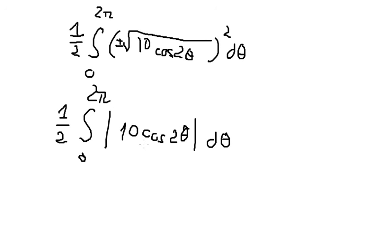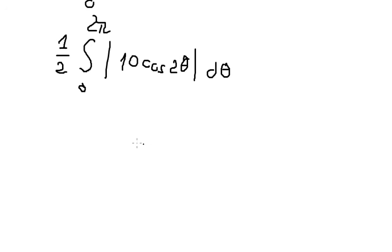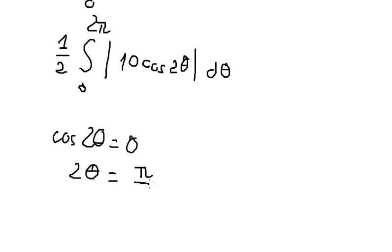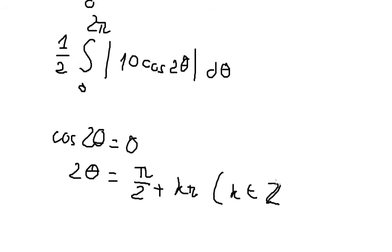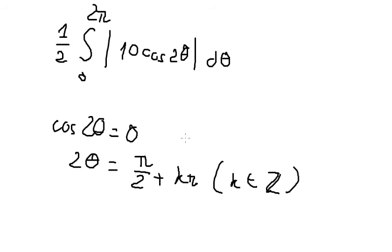We determine which part is positive and which is negative, so we set cosine 2 theta equal to zero. We get 2 theta equals pi over 2 plus k·pi, because cosine is zero there. So theta equals pi over 4 plus k·pi over 2, where k belongs to the integers Z. We divide both sides by 2.